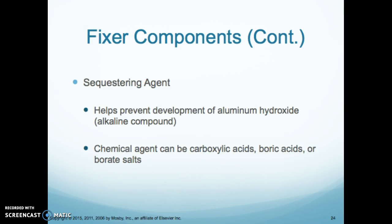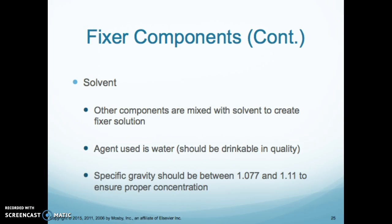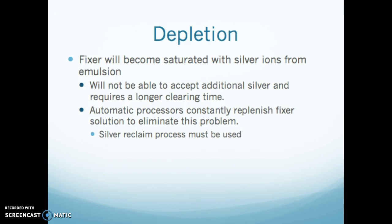The sequestering agent helps prevent development of an alkaline compound. The solvent — again, high-quality water — is mixed with other components to create the fixer solution. The fixer will become saturated with silver from the emulsion, so it will not be able to accept additional silver and requires a longer clearing time, meaning you need to ensure it is being recycled and replenished. Automatic processors constantly replenish fixer solution to eliminate this problem, and you'll learn about the silver reclamation process later on.